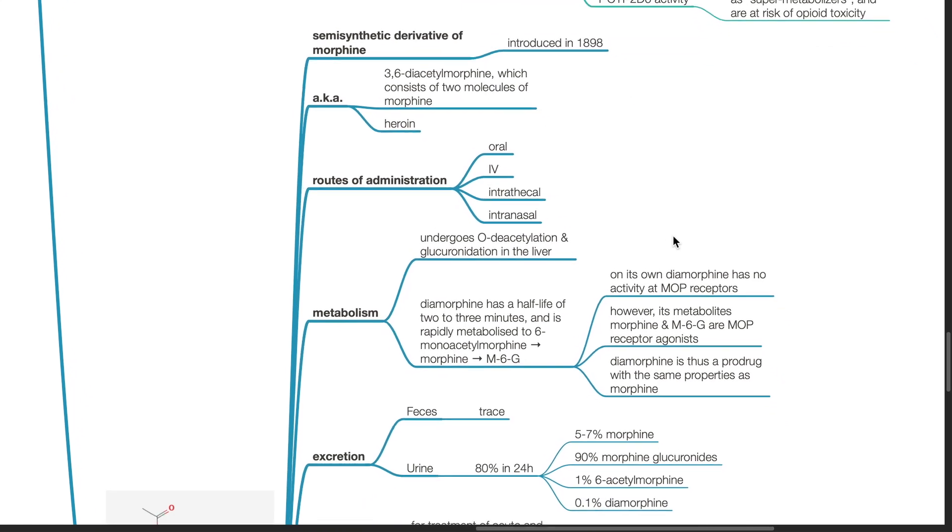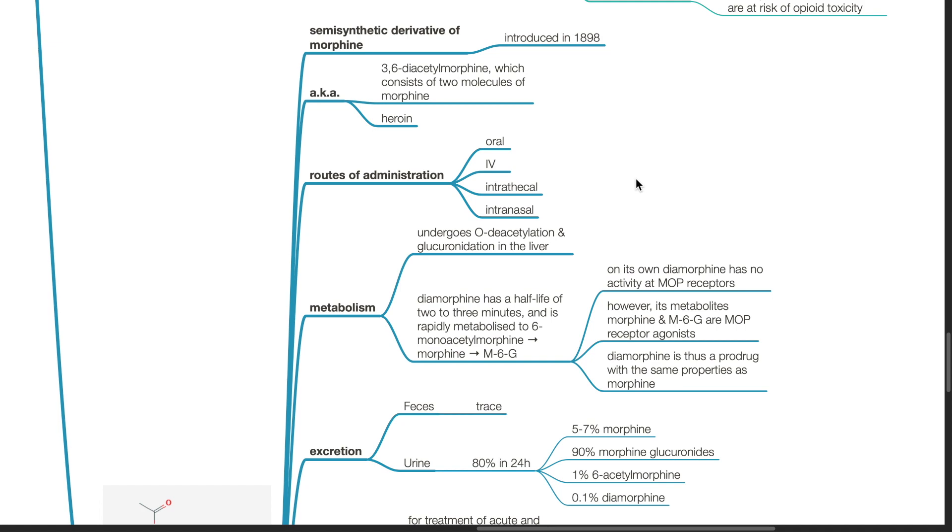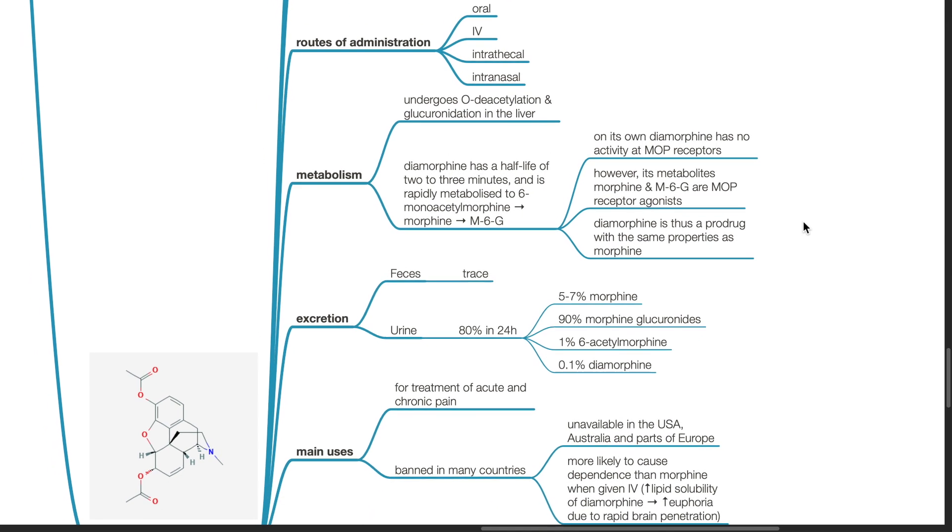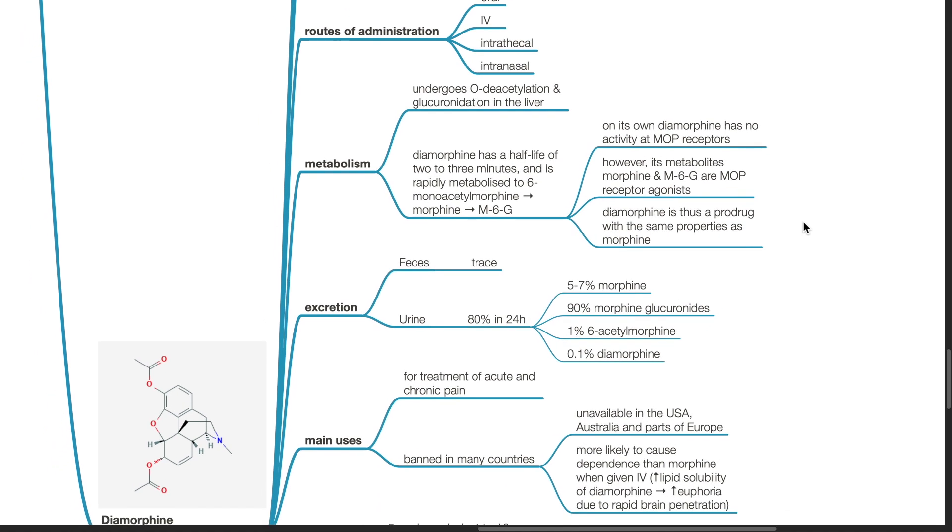Routes of administration: oral, IV, intrathecal and intranasal. Metabolism. It undergoes O-deacetylation and glucuronidation in the liver. However, diamorphine has a short half-life of 2 to 3 minutes and is rapidly metabolized to 6-monoacetylmorphine, morphine and hence to M6G.